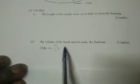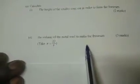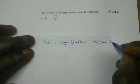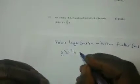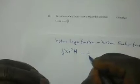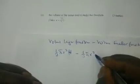Now having found the height of the smaller cone, we can find the volume of the metal used to make the frustum. The volume of the frustum equals the volume of the larger cone minus the volume of the smaller cone. The volume of a cone is one-third pi r squared h.